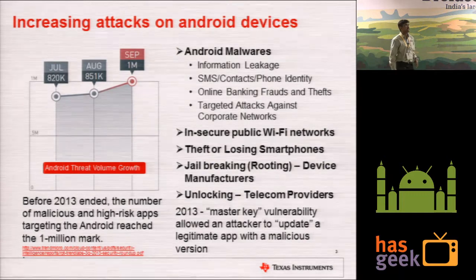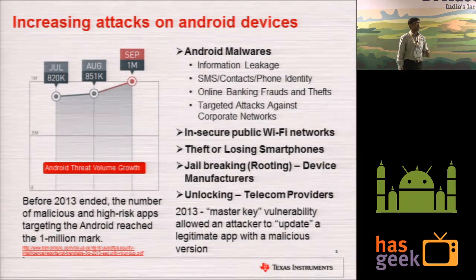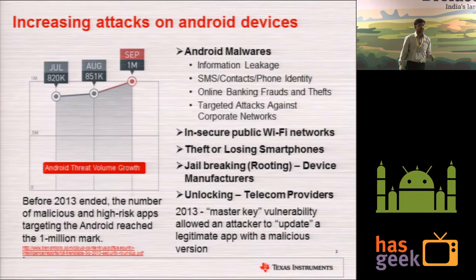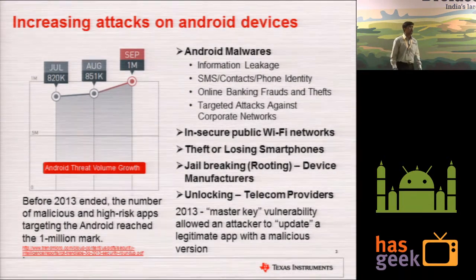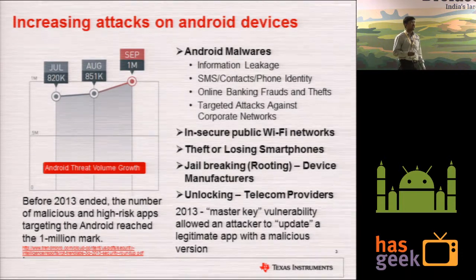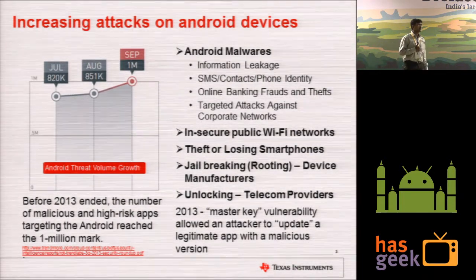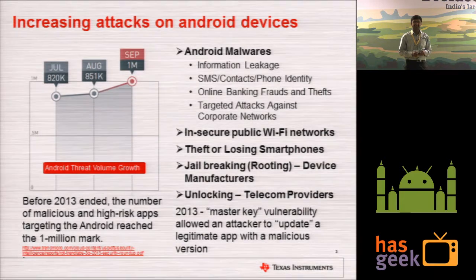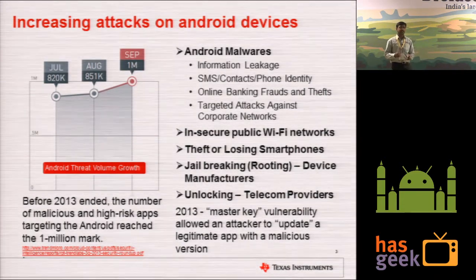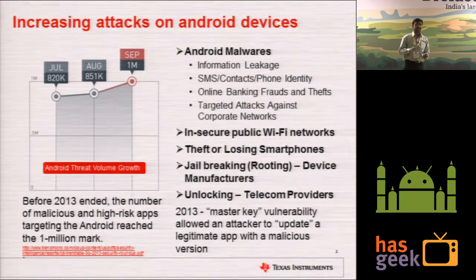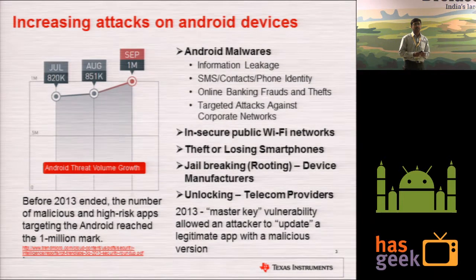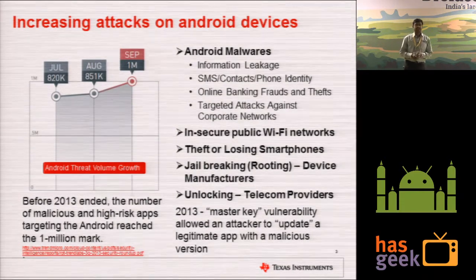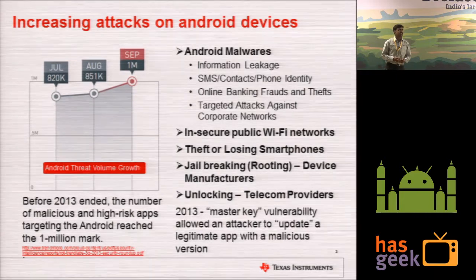This is a graph I took from the Trend Micro website. They are a leading anti-virus company and they have data up to September 2013. They show that around 1 million Android malware and high-risk apps exist today targeting Android. There are around 500 different app stores on the internet other than Google Play, and some of them are dedicated to hosting Android malware. That is what these statistics indicate.